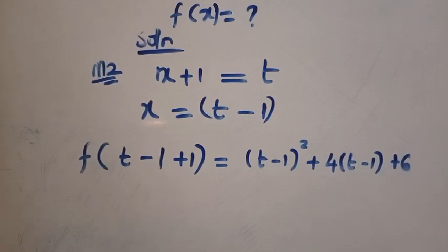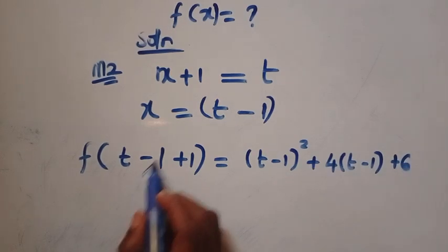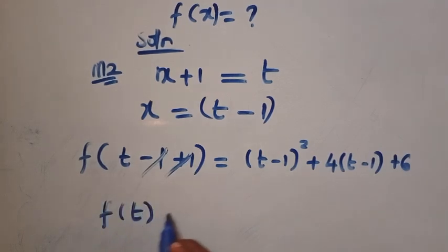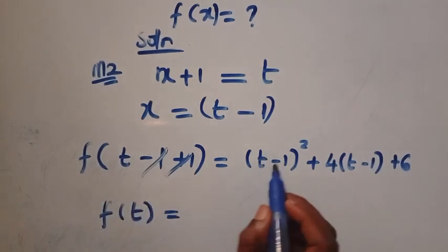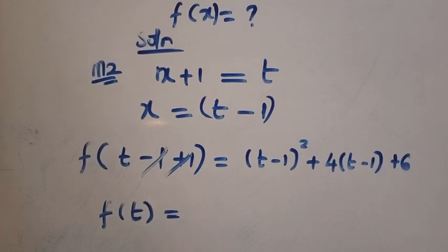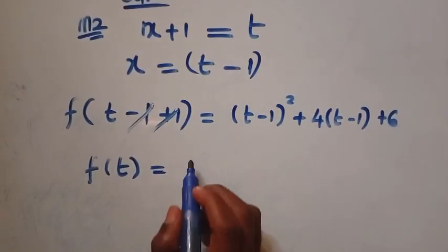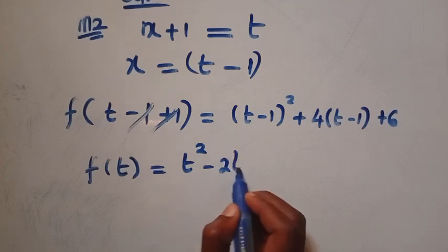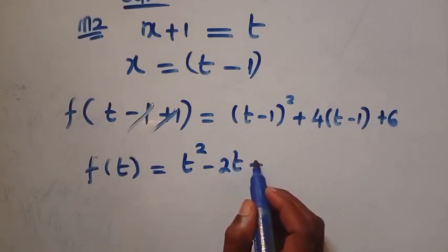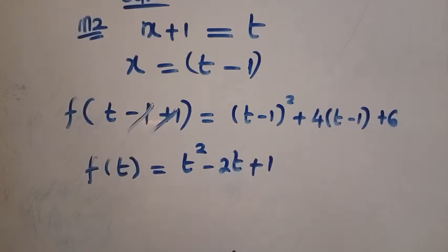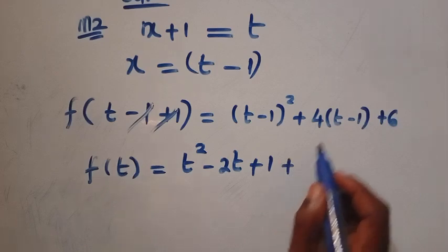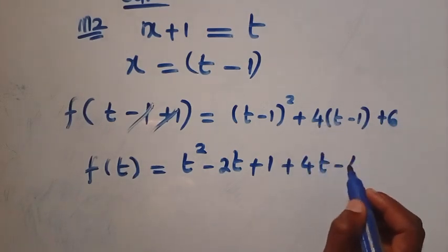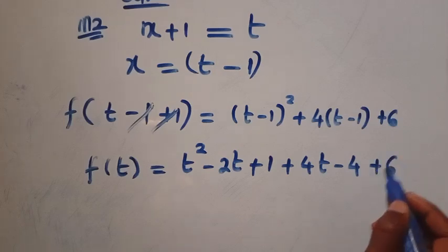So we have to get the same answer with the first method. Plus 1 minus 1 cancelled. Here is f of t equals expanding t minus 1 squared. We get t squared minus 2t, then plus 1. Also plus 4t minus 4 plus 6.